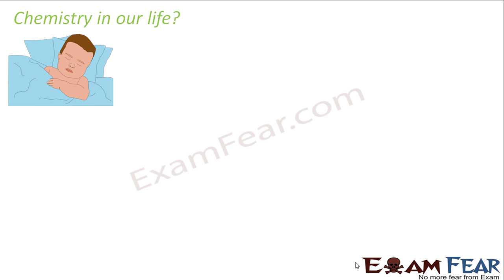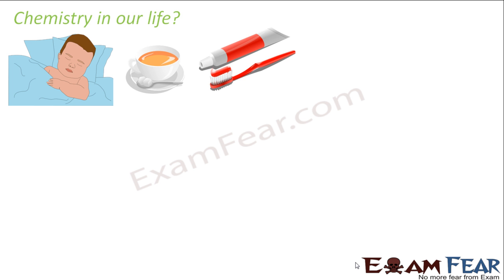Chemistry is everywhere in our daily life. The first thing we do in the morning is have tea, coffee, or milk — and these contain sugar, so they are nothing but chemical compounds. Once we're done, we use a toothbrush to clean our teeth, and toothpaste is a type of chemical compound. We also use soap or shampoo, which are again chemical compounds.